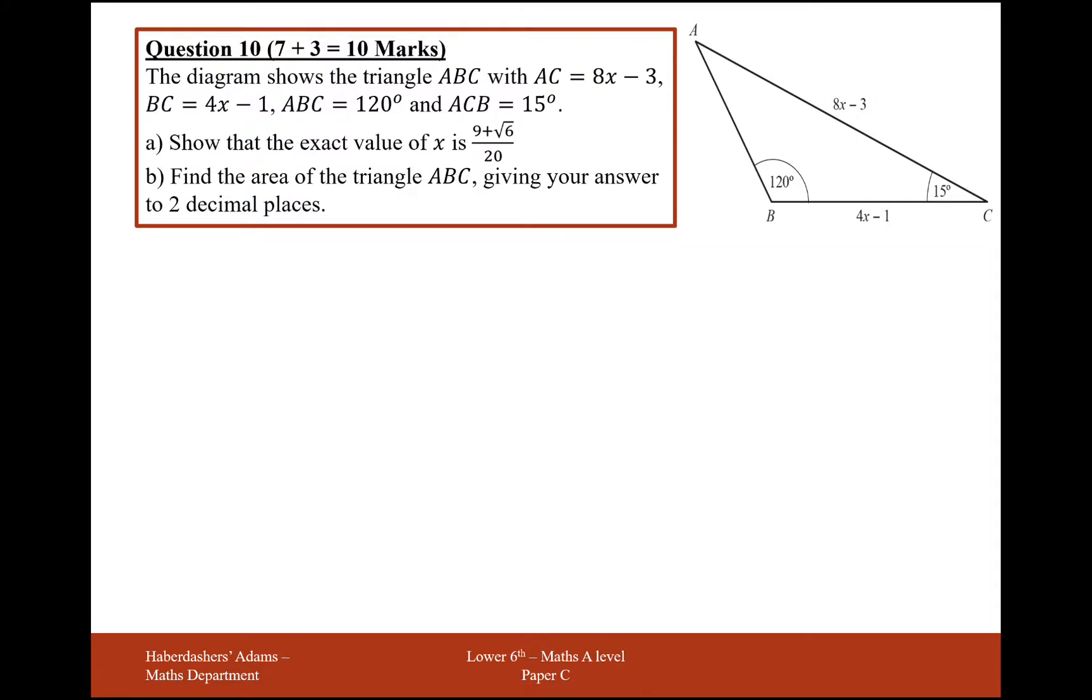The diagram shows the triangle ABC with AC equal to 8x minus 3, BC is 4x minus 1, angle ABC is 120 degrees, and angle ACB is 15 degrees. The exact value of x is 9 plus root 6 over 20.